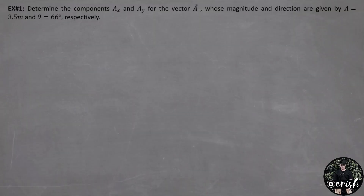Determine the components Ax and Ay for the vector A whose magnitude and direction are given by A equals 3.5 meters and angle theta equals 66 degrees respectively.